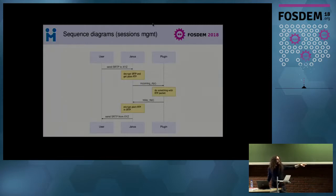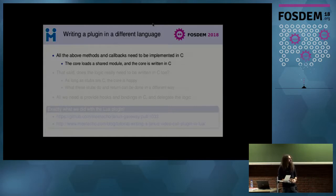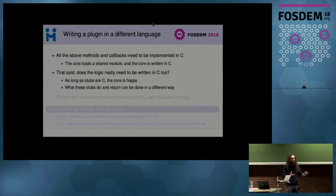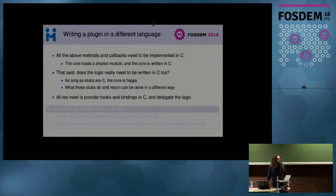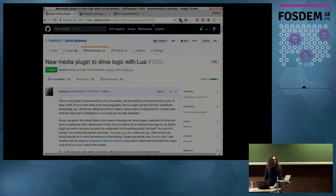Media is bridged by the general core: users send something via secure RTP, the plugin strips the security part, and the plugins have access to the unencrypted traffic for their needs. All plugins and methods need to be implemented in C, as Janus loads a shared library and expects a C interface — but we don't actually need the whole plugin in C as long as the interface looks like C. This is exactly what we did with the Lua plugin, currently a pull request on our Janus repository.